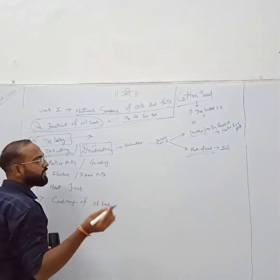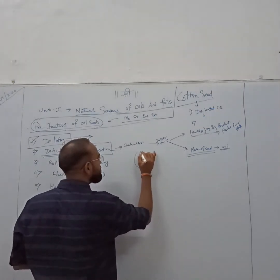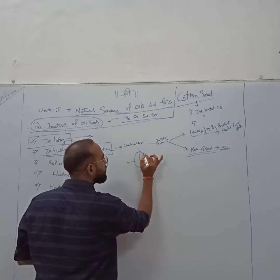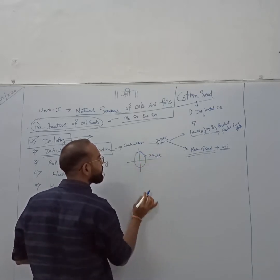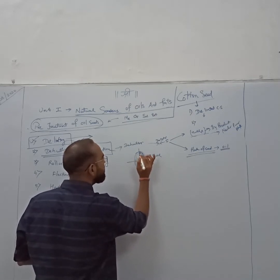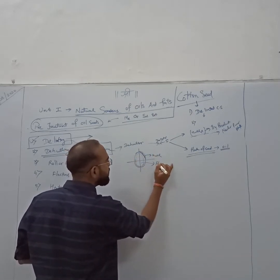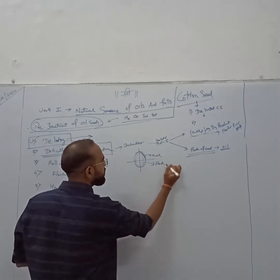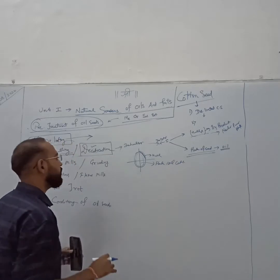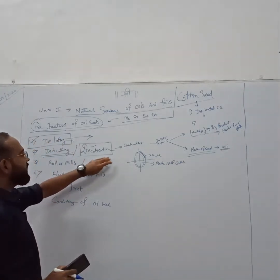Decortication is to cut the seed in 4 or 5 bites. This is your seed, to cut it in 4 or 5 bites. This is your hull, just outer surface. It should be removed. And this is the actual center part, the seed flesh. That is oil containing. So it should be carefully decorticated.